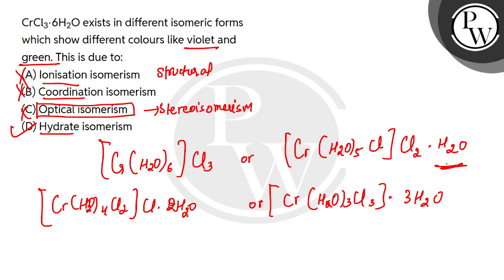Why can't it be ionization isomerism? Because for ionization isomerism, simple anion and cation can be exchanged in a complex. But if H₂O is neutral, it cannot be ionization.